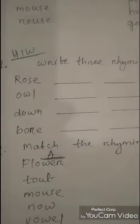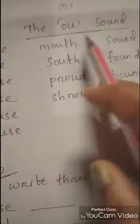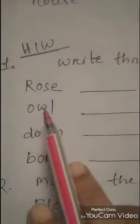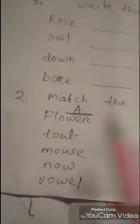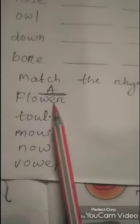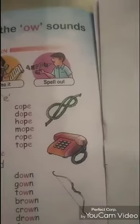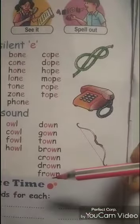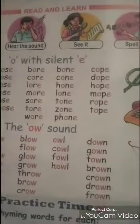I have written the O silent E, O-W sound, and the O-U sound on the hard copy. Then I have given some homework for you. Write three rhyming words each for: Rose, Owl, Down, Bore. Then number two: match the rhyming words — match column A with column B. My dear students, read carefully, try to understand, and remember the spellings of these words. Then we shall discuss about the other sounds. Till then, bye and thanks.